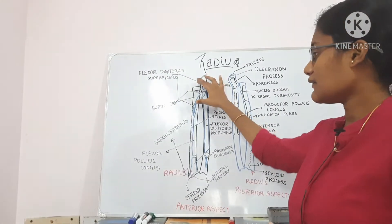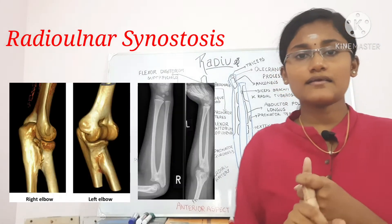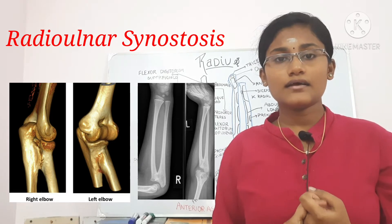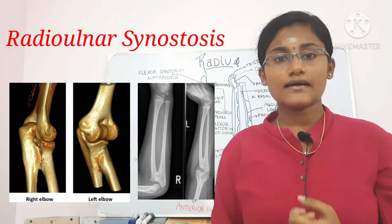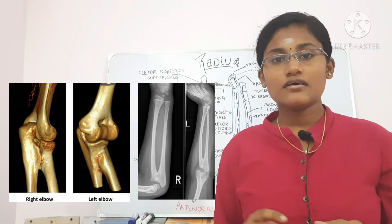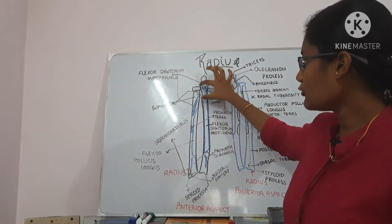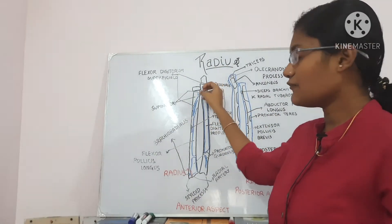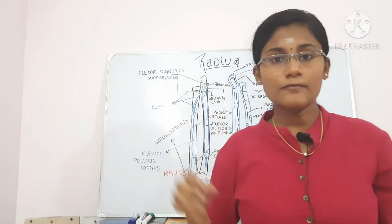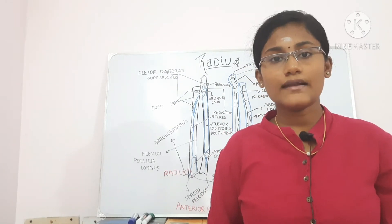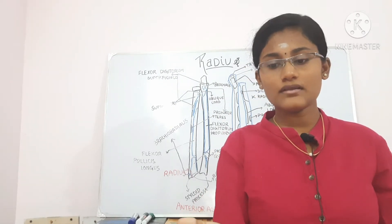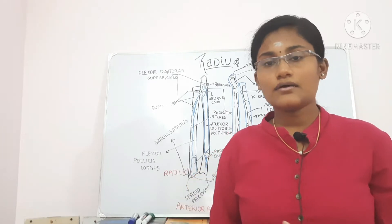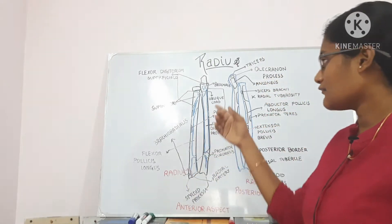The clinical anatomy related to the upper end: number one is radioulnar synostosis, a condition in which the proximal 2.5 centimeters of the radius and ulna are fused with each other. This does not allow any pronation or supination movements.